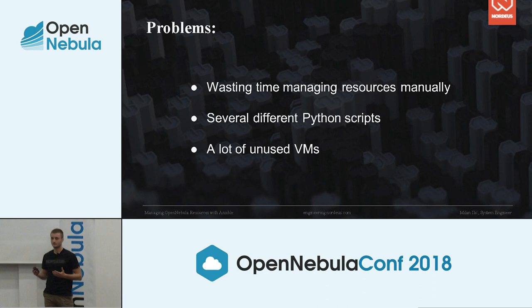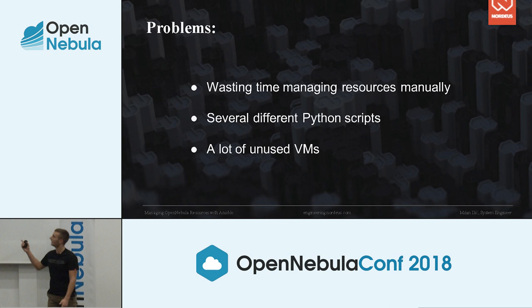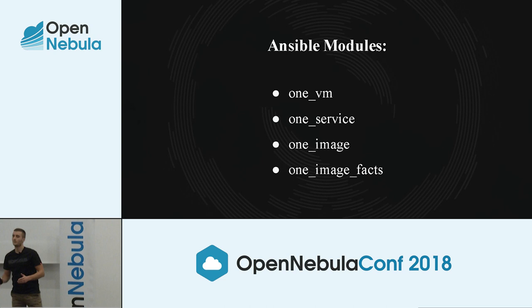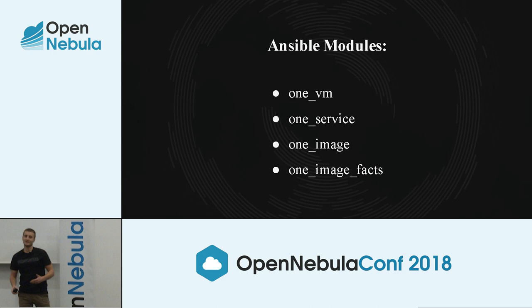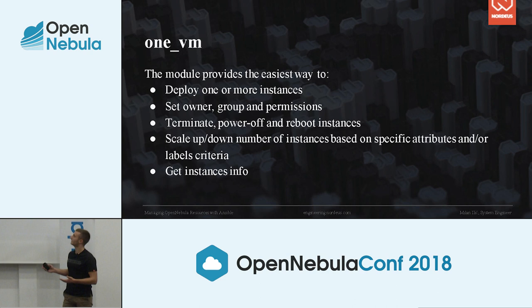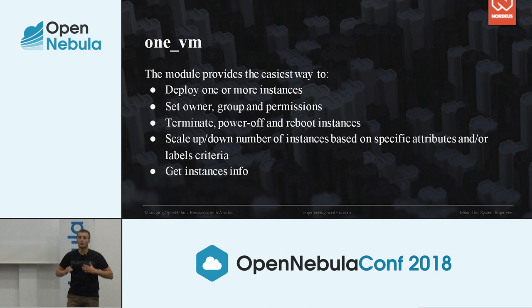Inspired by Google's GCE and Amazon's EC2 modules, but also aligned with how OpenNebula works, we developed one_vm, one_service, one_image, and one_image_facts modules. Now I'll show you what you can do with them. The one_vm module lets you easily create and manage OpenNebula virtual machines — deploy one or more instances, terminate them, power them off, reboot them, get instance info, and so on. We covered almost all possible options from the OpenNebula web interface.